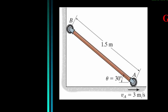Example: Roller A is moving to the right at 3 meters per second. Find the velocity of B at the instant when θ = 30 degrees. Our plan is to establish a coordinate system, draw a kinematic diagram, express each velocity vector in i, j, k components, and solve the equation.